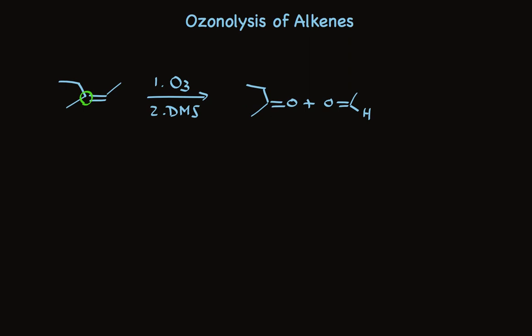Notice that when I draw these carbonyl products, I draw the alkyl groups with the same orientation they have in the alkene. Simply split that double bond, stick oxygens with double bonds in the same places. That way you can't go wrong when you write the structures of the products.